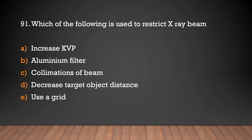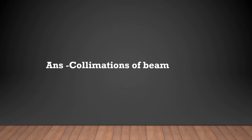Which of the following is used to restrict extra beam? Increased kVp, aluminium filter, collimation of beam, decreased target object distance, use a grid. Answer: Collimation of beam.